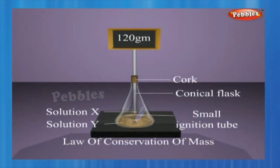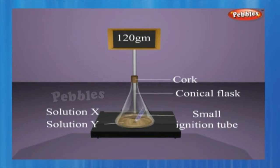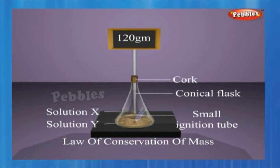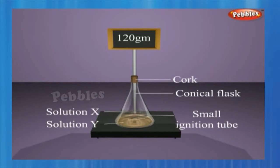Law of Conservation of Mass activity: Take one of the following sets, X and Y, of chemicals. Set options are — X: Copper Sulphate, Y: Sodium Carbonate; X: Barium Chloride, Y: Sodium Sulphate; or X: Lead Nitrate, Y: Sodium Chloride.